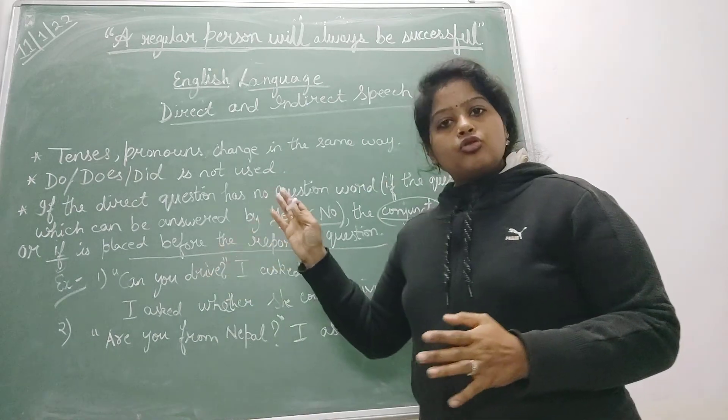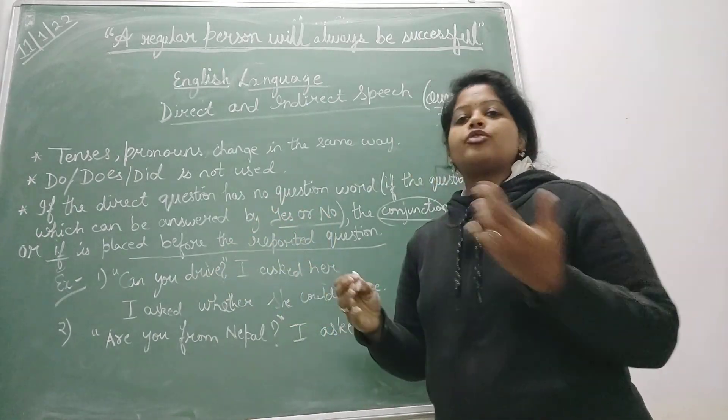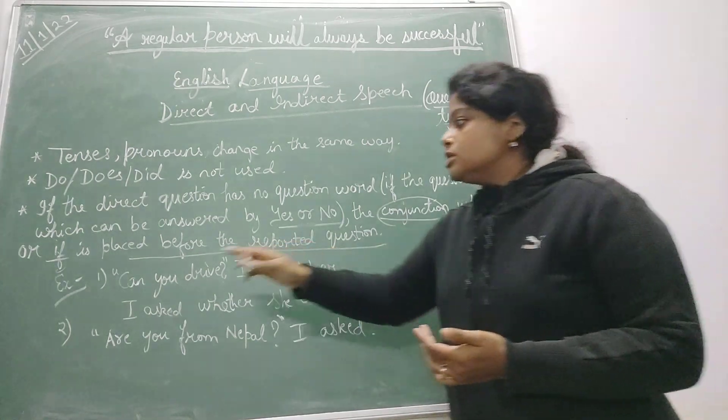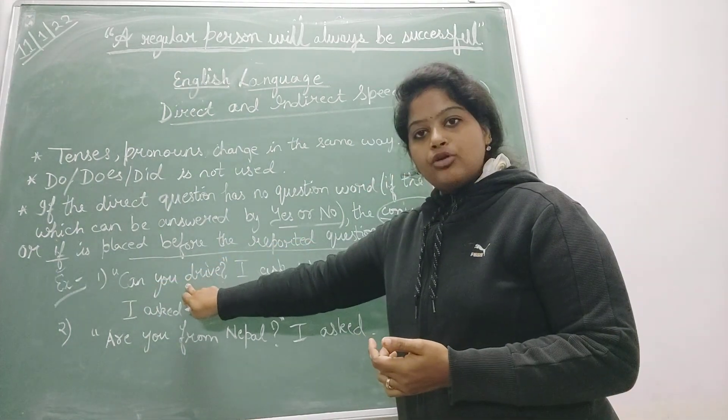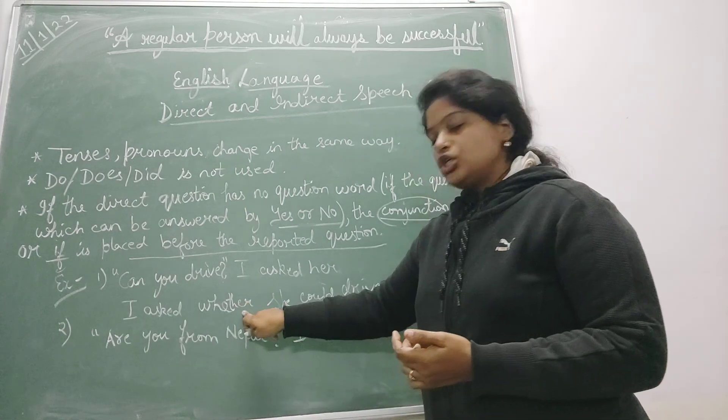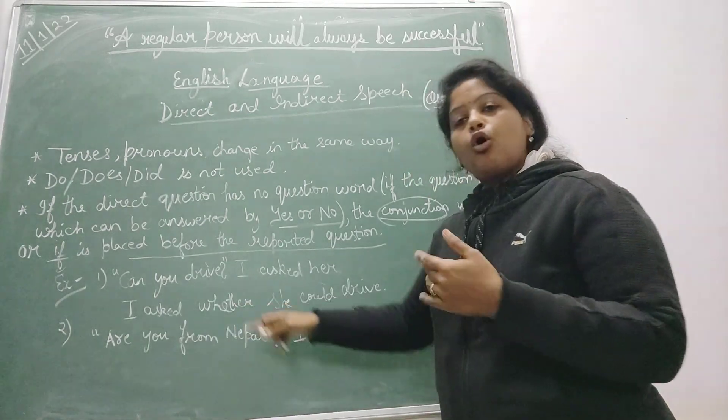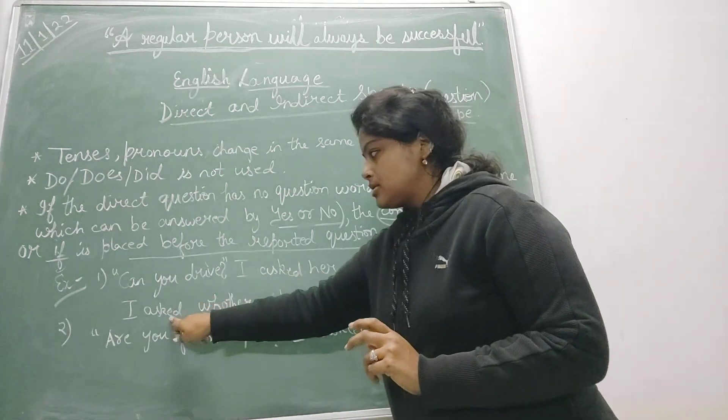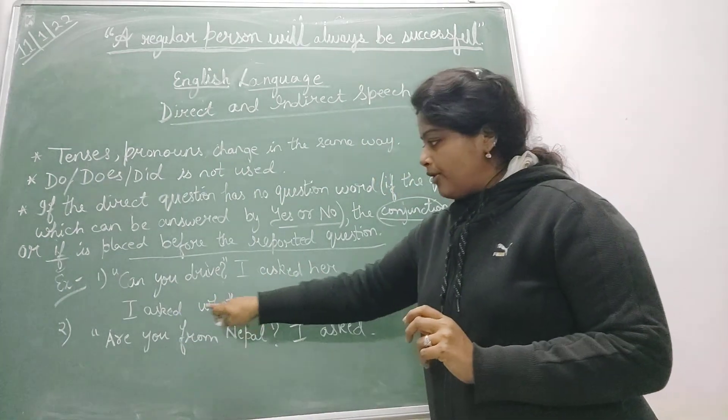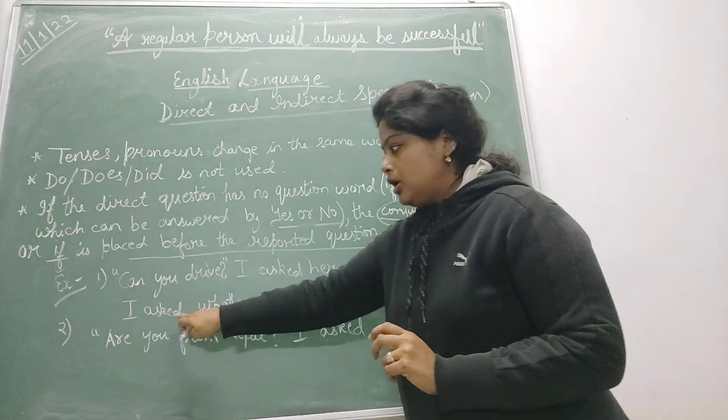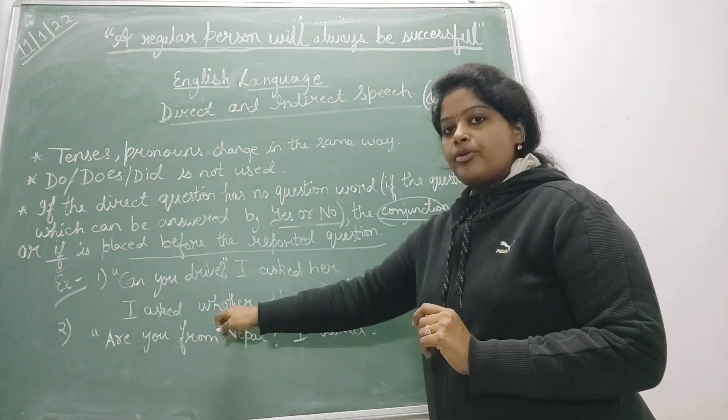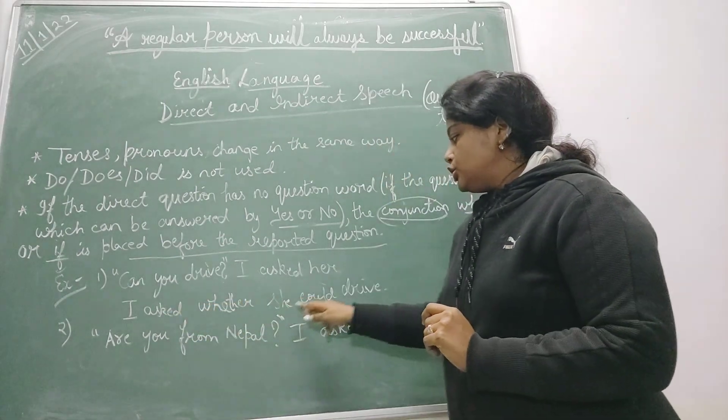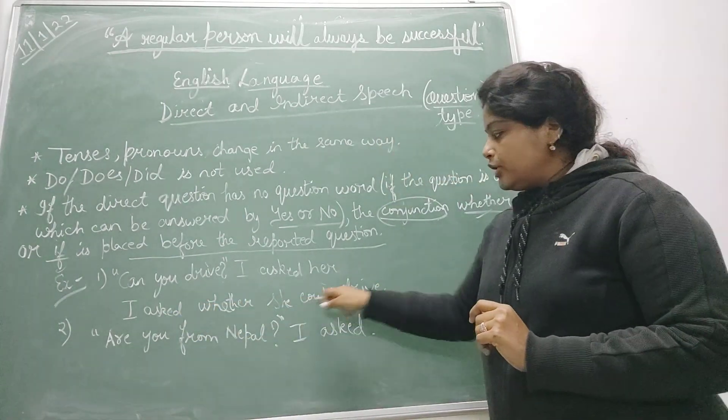Can you drive? So easiest way to do this, ask yourself this question. Can you drive? You will say either yes or no, right. So it can be answered in yes or no. We are going to use the conjunction, that is whether or if. I asked her, so I asked whether - over here, before the direct question or reported question, and after the reporting verb. So I asked whether she could drive.